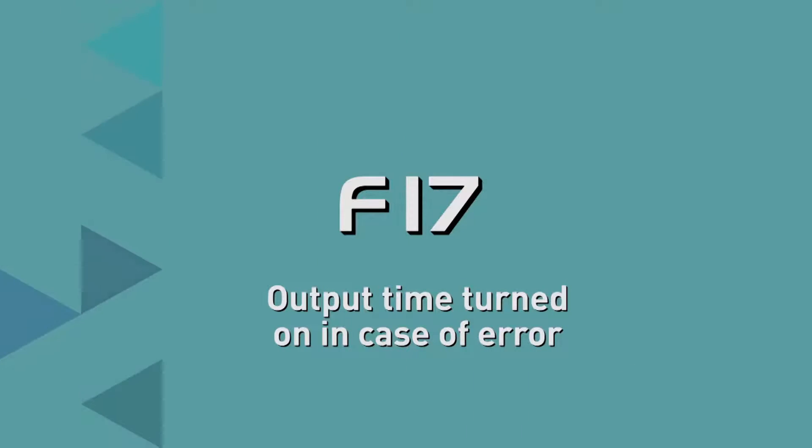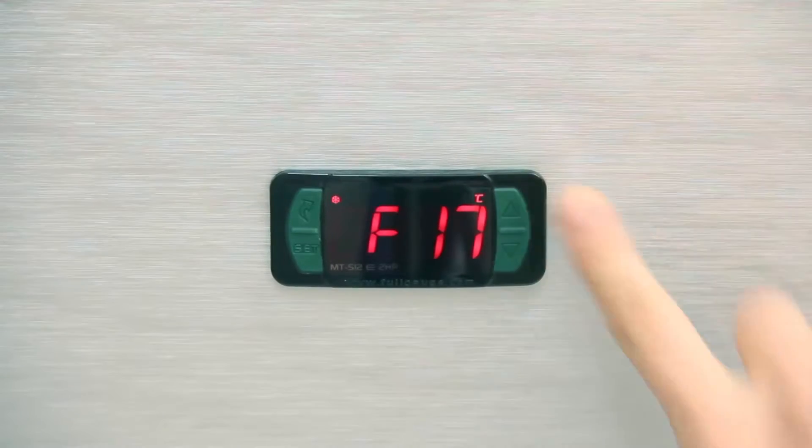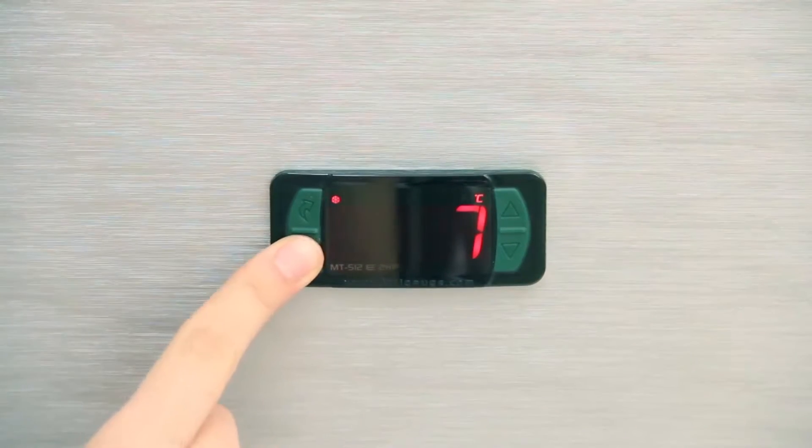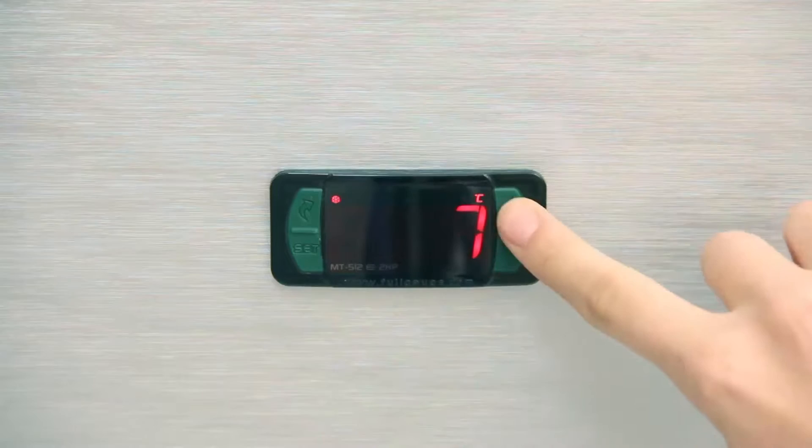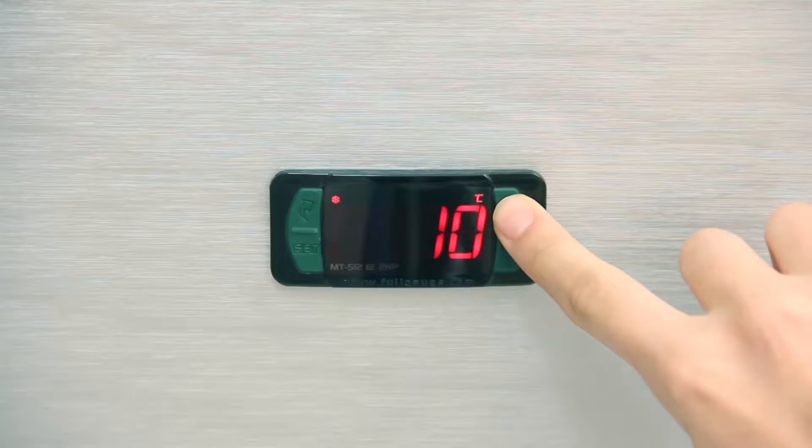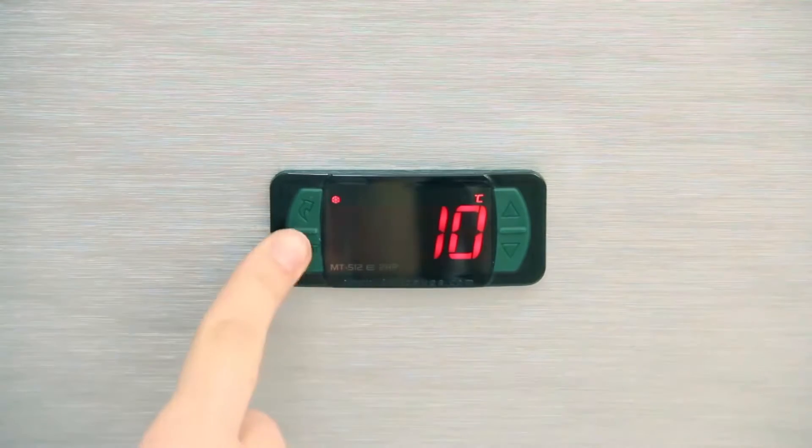F17, Output Time turned on in case of error. It sets the minimum time the compressor will stay on if the sensor is disconnected or out of the measurement range. In the example, we opted for an increase of 10 minutes.